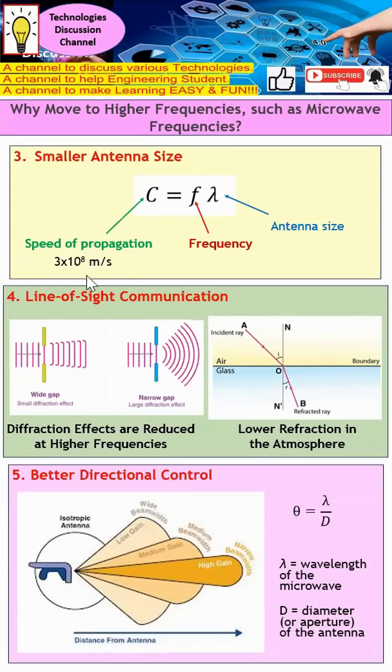Next, we have a better chance to have line-of-sight communication with higher frequency, because diffraction will be minimum at higher frequency. We're also going to have lower refraction at higher frequency. Because of this, we have a better chance to have line-of-sight communication.